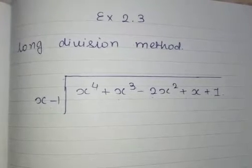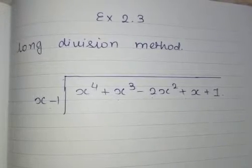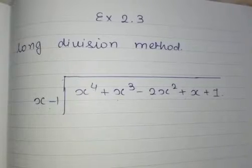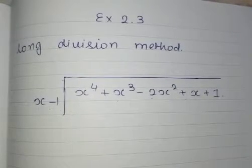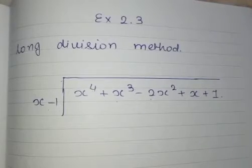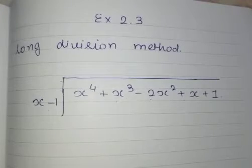Starting with your exercise 2.3 which is having the long division method. This is same as the division which you have performed till date. The difference is just that instead of numbers you will be having the alphabets, that is X, Y, T, P or any other.